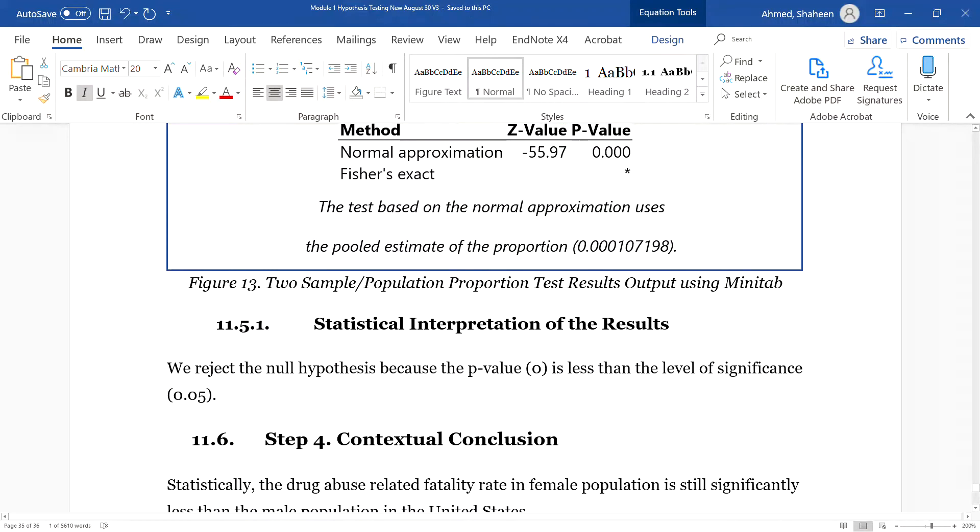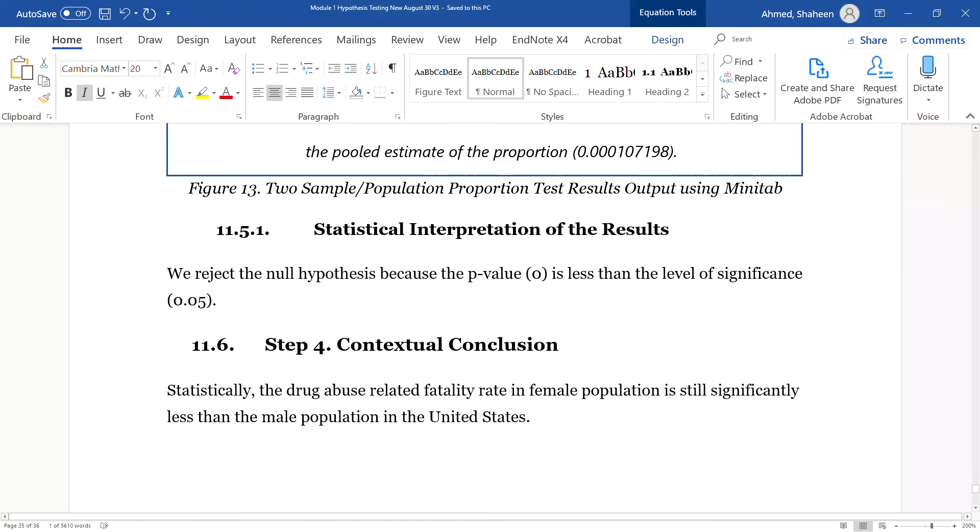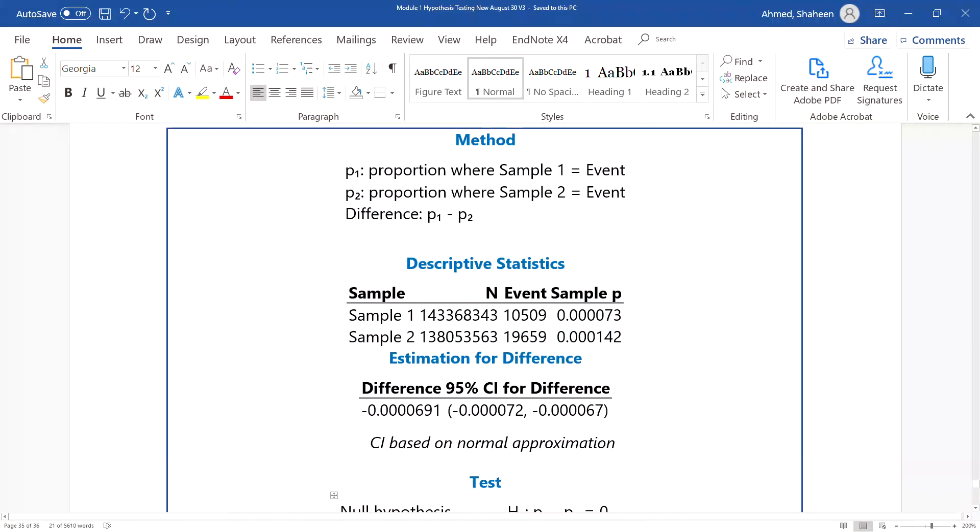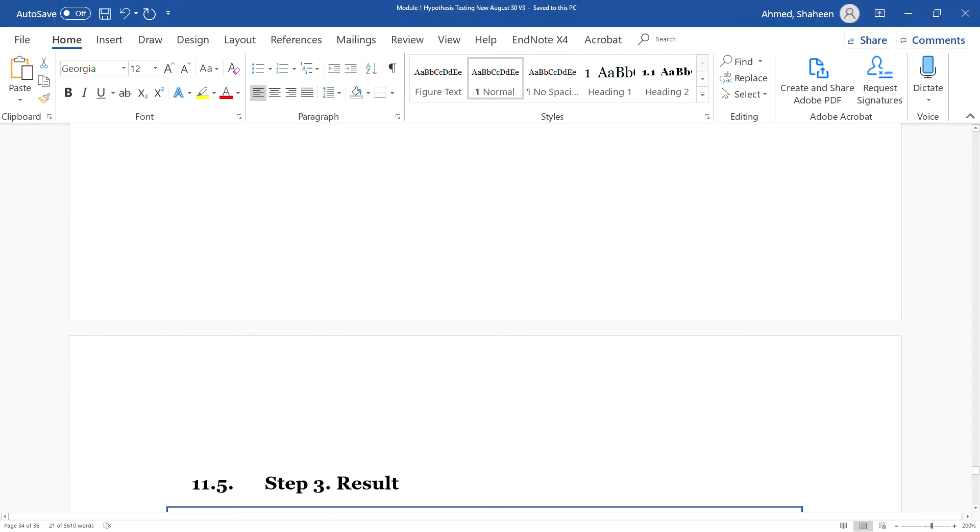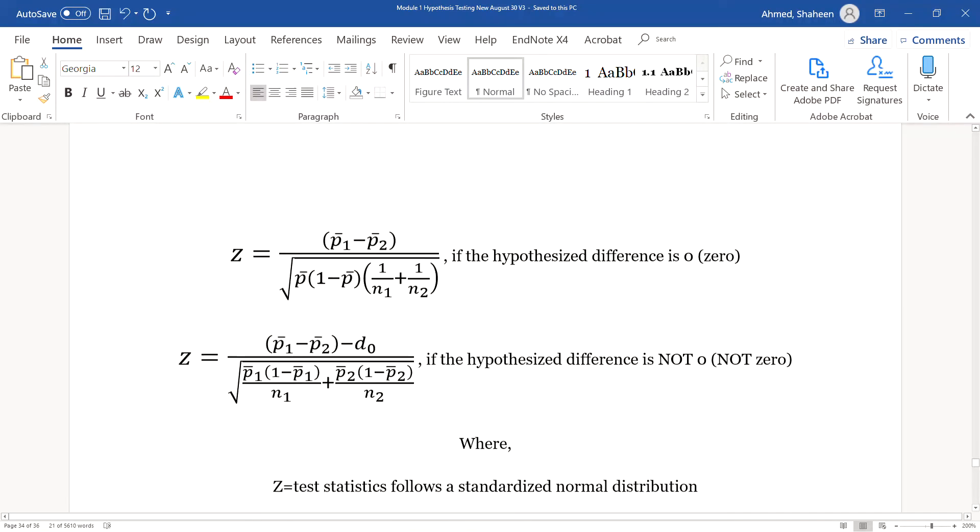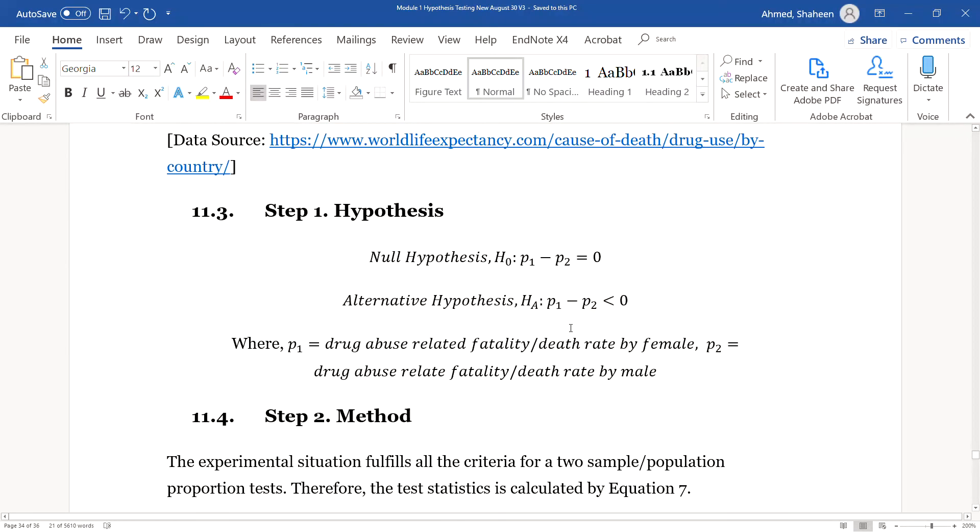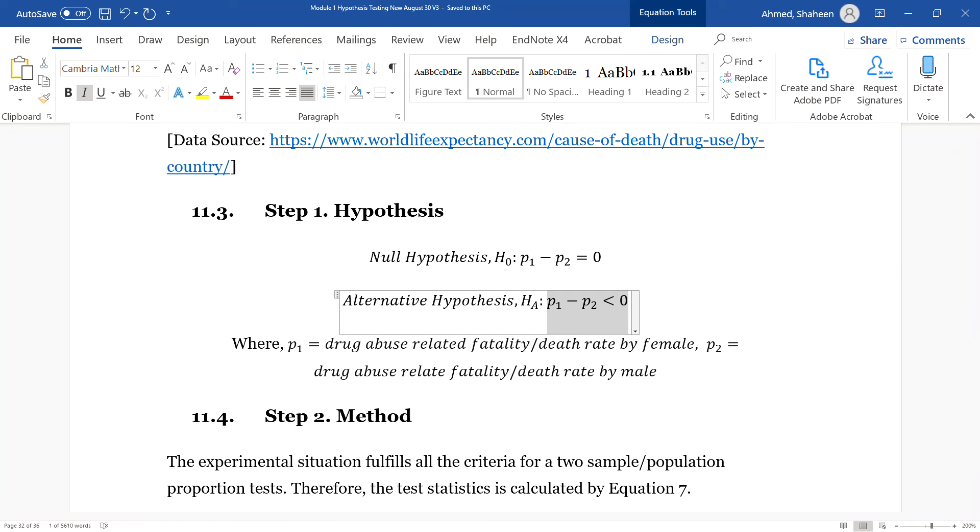Let me explain. We reject the null hypothesis, meaning that it's not going to happen - the probability is very low. So yes, the female has still the lower number of death rate than the male population. That was the alternative hypothesis we made. Female is still less - yes, statistically, females still abuse drugs less and still their fatality is less than the male.